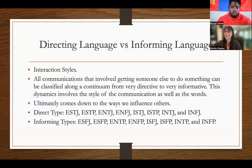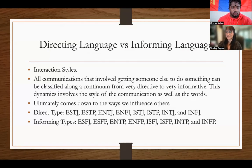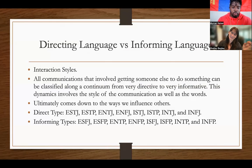The direct types are ESTJ, ESTP, ENTJ, ENFJ, ISTJ, ISTP, INTJ, and INFJ. Then the informing types are ESFJ, ESFP, ENFP, ISFJ, ISFP, INTP, and INFP. Basically what this means is that there's a communication style everyone uses no matter who you are — you have a higher propensity to do one or the other.